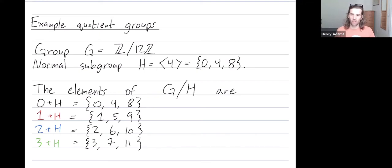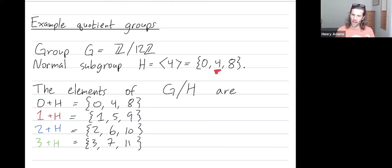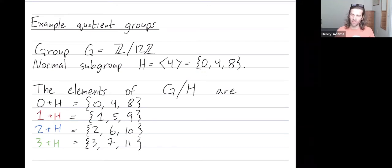Our subgroup is going to be the cyclic subgroup generated by the element 4. I start with 4, add 4 to get 8, add 4 again to get 12, but 12 is just 0 in Z mod 12Z. So the element 4 generates the cyclic subgroup {0, 4, 8}.